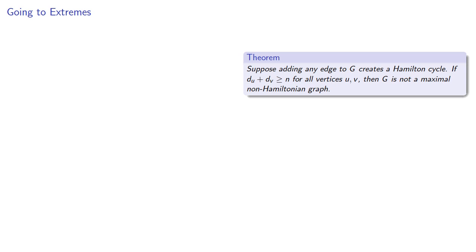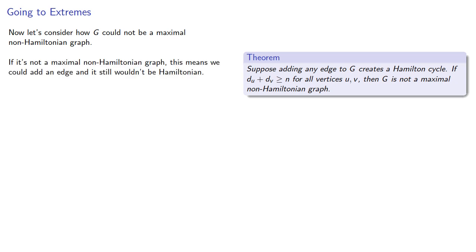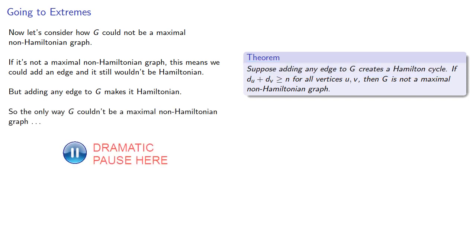However, it might not be obvious why this is an improvement, so let's consider how G could not be a maximal non-Hamiltonian graph. If it's not a maximal non-Hamiltonian graph, this means we could add an edge and it still wouldn't be Hamiltonian. But remember that adding any edge to G makes it Hamiltonian, so the only way G couldn't be a maximal non-Hamiltonian graph is if G is already Hamiltonian.